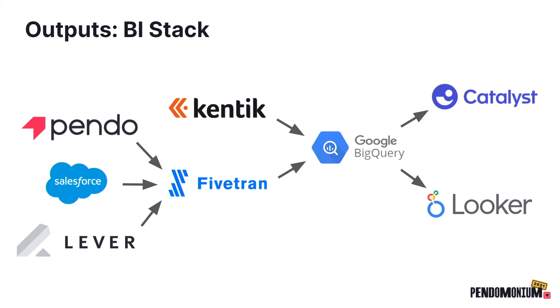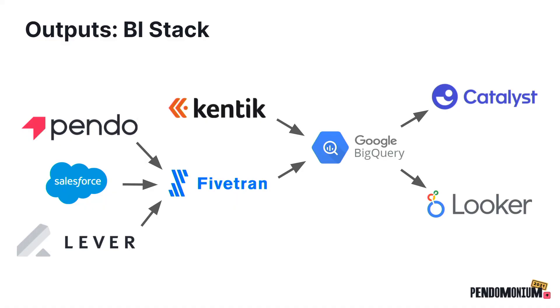Another output is our BI stack. We use BigQuery as our data warehouse. We have Kentik product data feeding into BigQuery directly, and we use an ETL product called Fivetran — which we chose because they were the only ones at the time with a Pendo API integration — to pull data from other products into BigQuery. All the detailed history data about clicks, page visits, visitors, and accounts that's in Pendo is available to mix and combine with data from other sources.